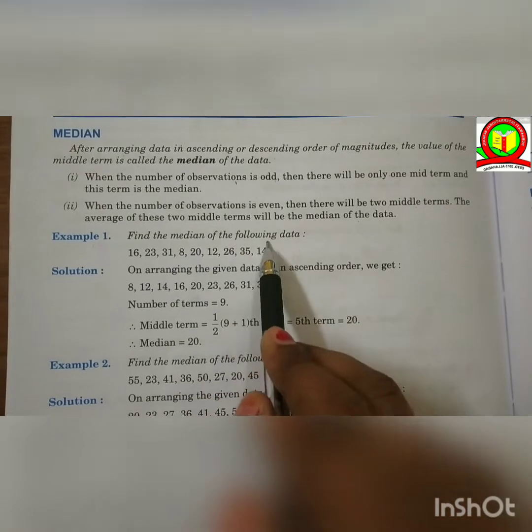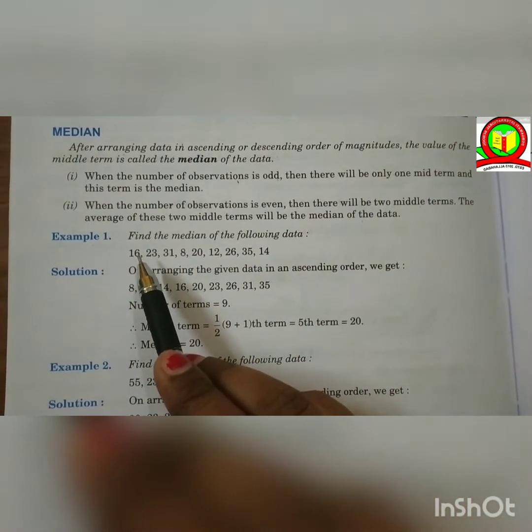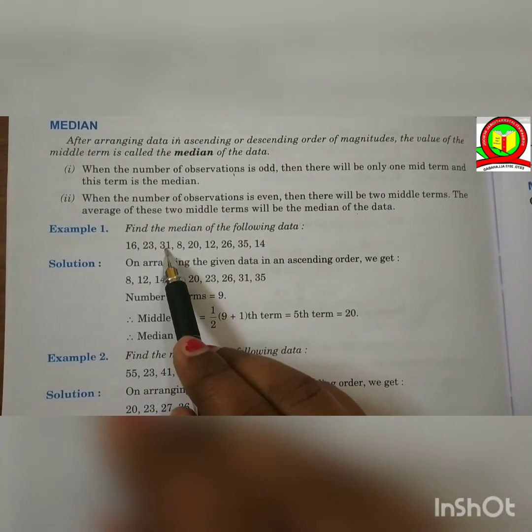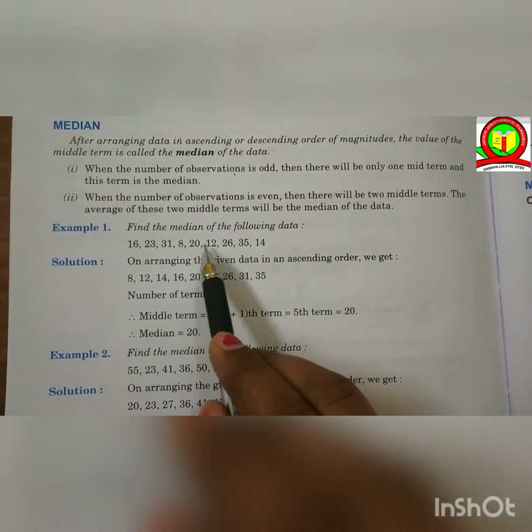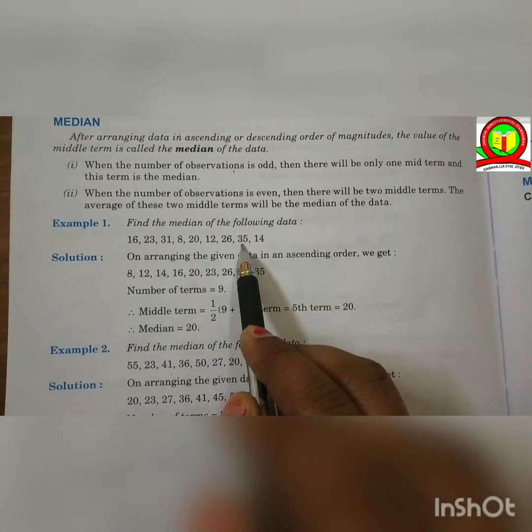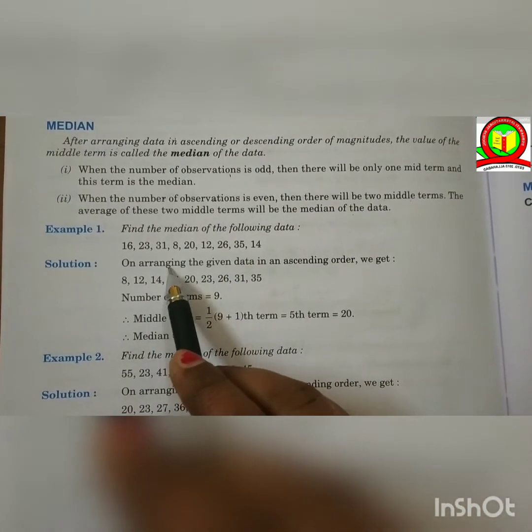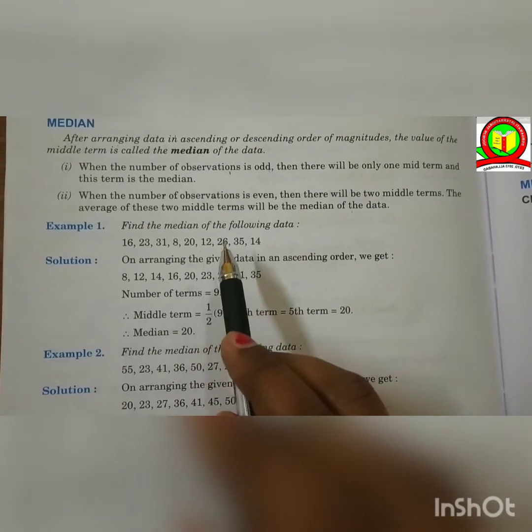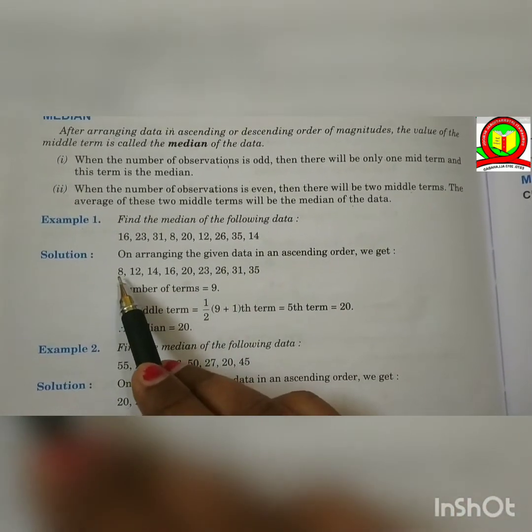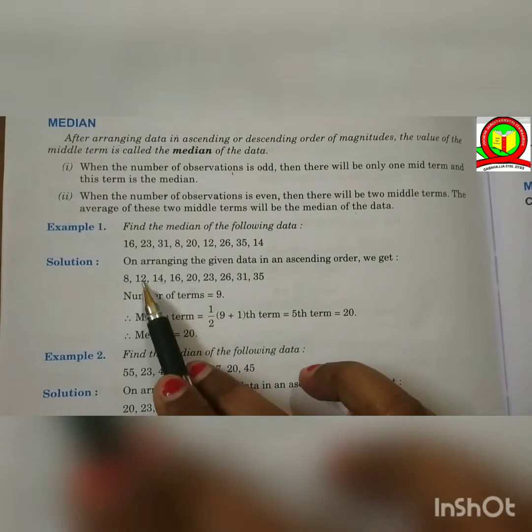Example 1. Find the median of the following data: 16, 23, 31, 8, 20, 12, 26, 35 and 14. First, we have to arrange the data in ascending order. Then we get this data. Now, number of terms here: 1, 2, 3, 4, 5, 6, 7, 8, 9.